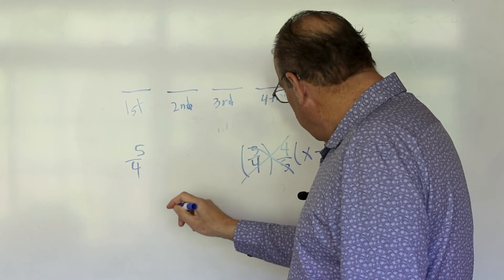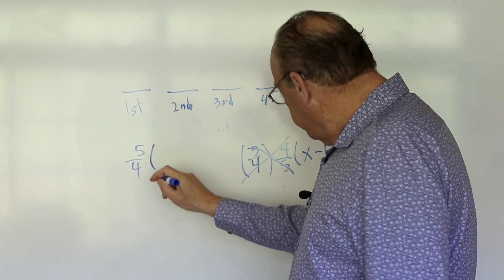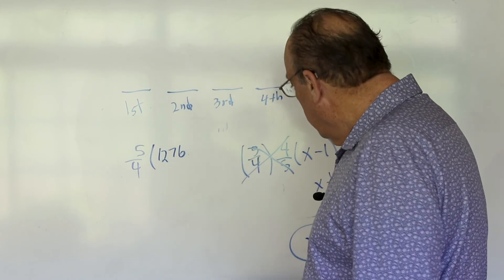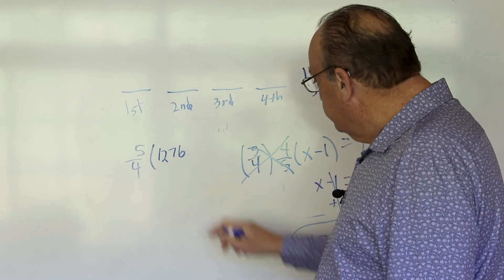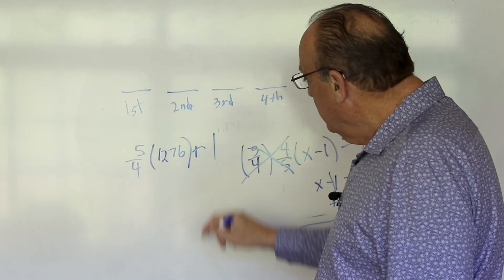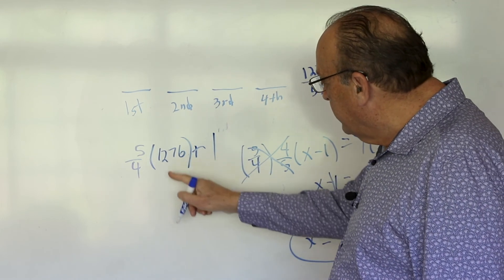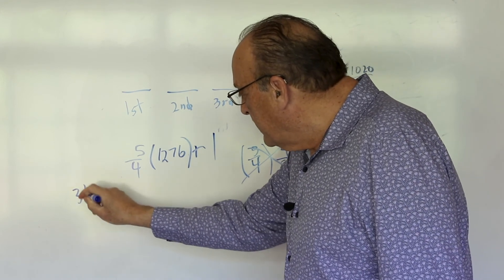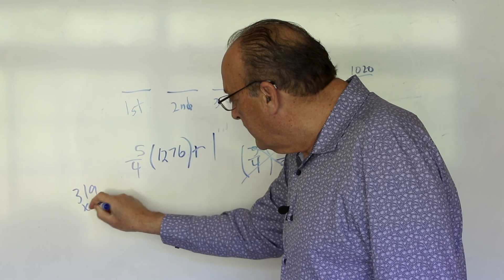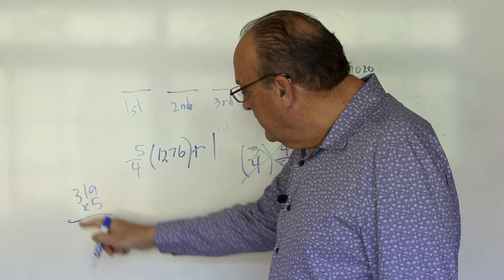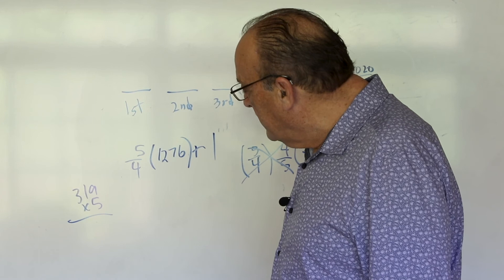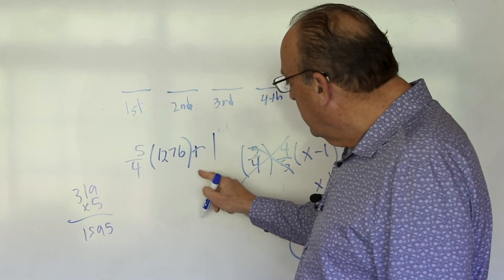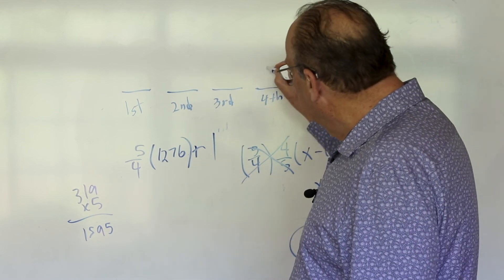So 5 fourths of 1276 plus 1. So divide that by 4. You get 319. And 319 times 5 is 1595. And then we add 1. We get 1596.